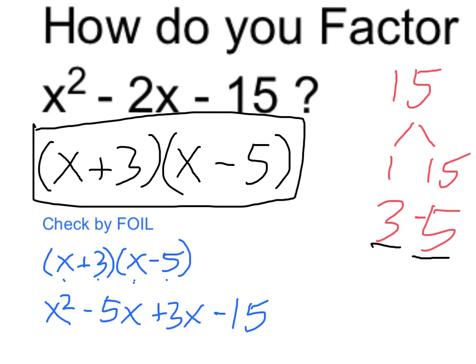So yes, this is going to be the same, because these two terms will combine. A minus 5x and a plus 3x will combine, and they'll be the same as the minus 2x in my original. So yes, I did get it right. This product of binomials is the factored form of the trinomial that I started with. Thank you.